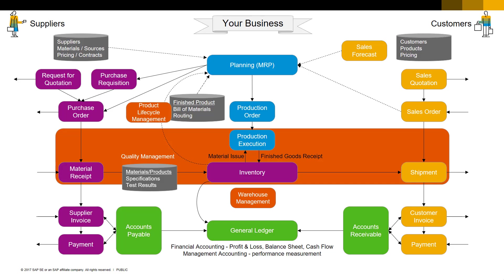That's where Warehouse Management Systems come in. A good WMS can help you track in which location every single item is stored at any time, right down to the row, aisle, and bin location. Since the WMS knows exactly where everything is, it can help you optimize the placement of inventory throughout the warehouse, so that you use the space available to you most effectively and the warehouse labor available to you most efficiently. We'll talk more about warehouse management systems in a later lesson of this course.